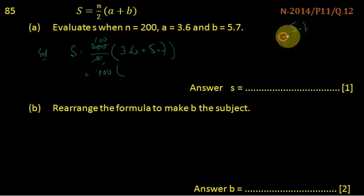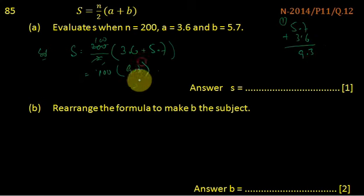So 5.7 plus 3.6: 6 and 6 is 12, carry the 1, that's 13. So the sum is 9.3.